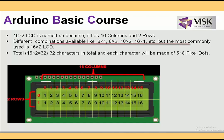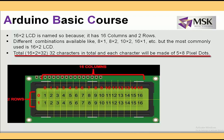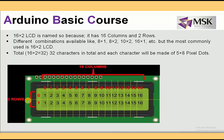There are multiple LCD combinations available: 8 by 1, 8 by 2, 10 by 2, 16 by 1, 20 by 4, and so on. The total number of characters this 16 by 2 LCD can display is 32, and each character is made up of either 5 by 7 or 5 by 8 pixel dots. You can see here the total 16 columns in two rows.